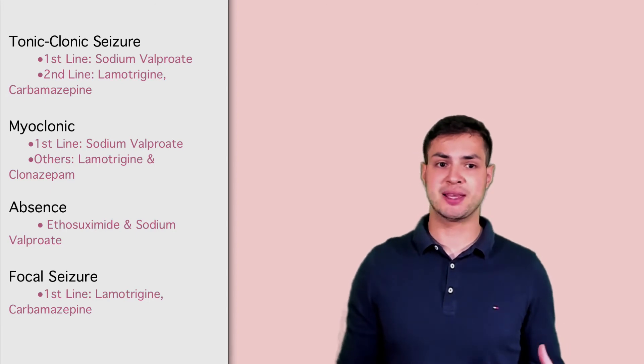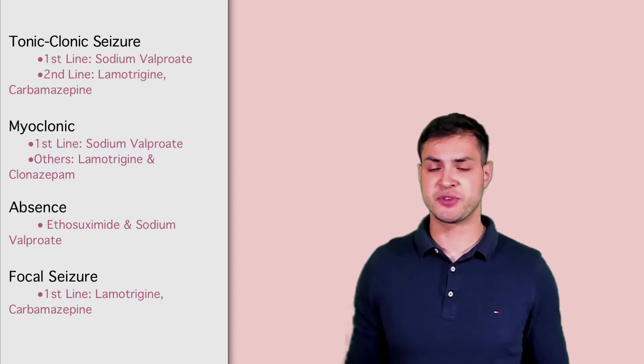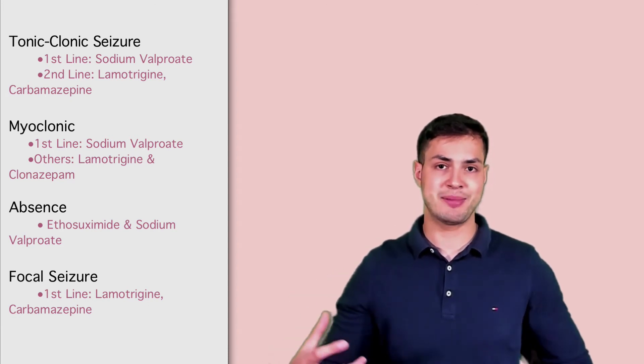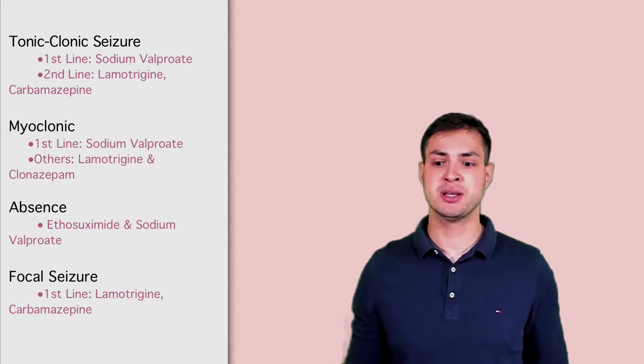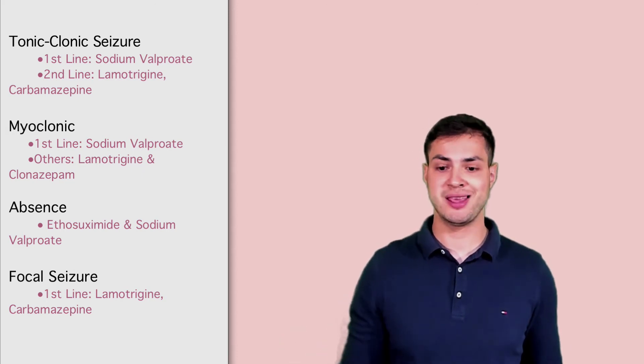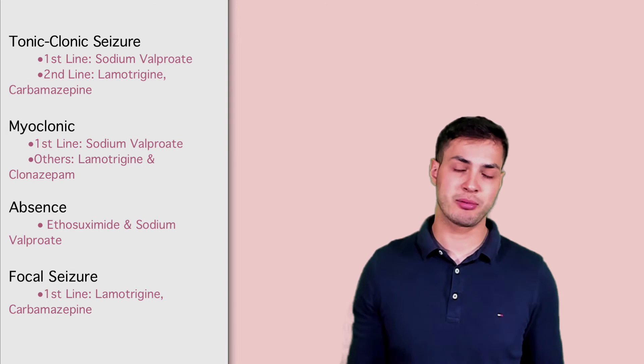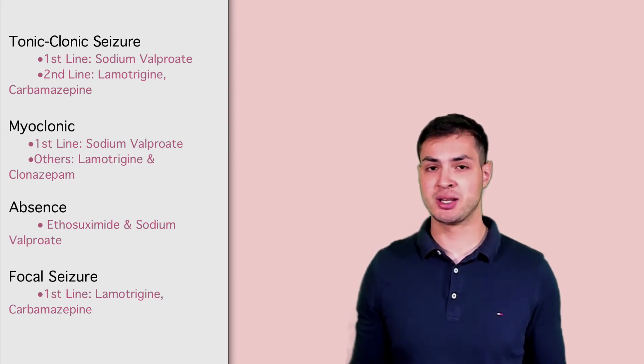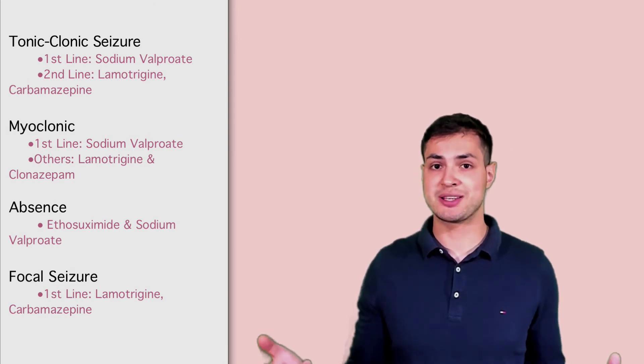Next thing I'll talk about is a seizure called myoclonic seizure. Myoclonic seizure is actually just jerks that happen. It could be the neck, it could be the shoulder, it could be the hands. It usually happens in a rhythmic, uncontrollable fashion. So maybe someone is making a cup of tea or a cup of coffee and they start jerking and they spill that cup of coffee. That's a classic exam question. Again, the treatment for myoclonic seizures is sodium valproate.